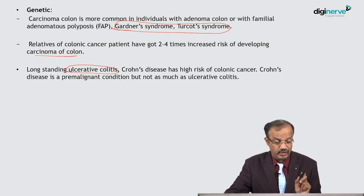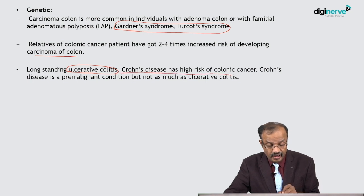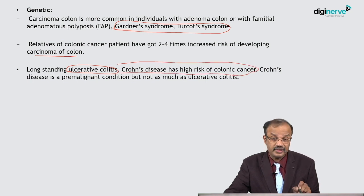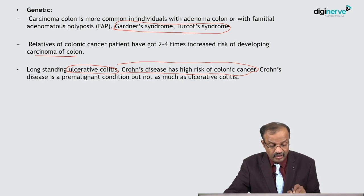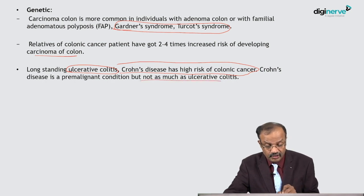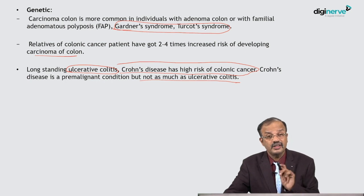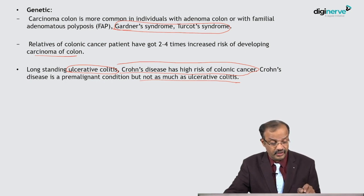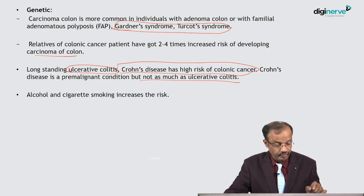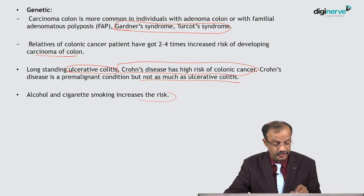Long-standing ulcerative colitis is a potentially malignant condition — long-standing ulcerative colitis may turn into malignancy. Crohn's disease is also a high risk for colonic cancer, but not as much as ulcerative colitis. Both are premalignant conditions, but ulcerative colitis carries much more risk than Crohn's disease. Alcohol and cigarette smoking also increase the risk.